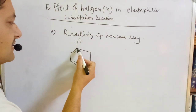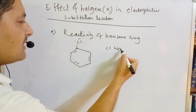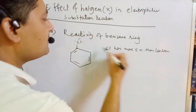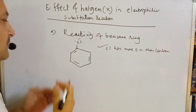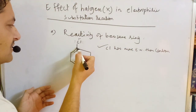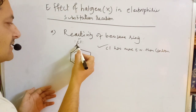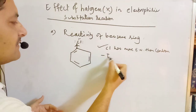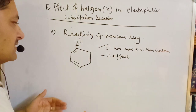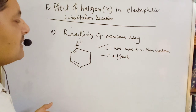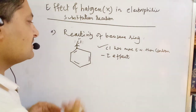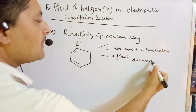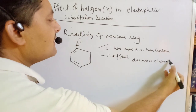Chlorine has more electronegativity than carbon. Because of this, chlorine in the C–Cl bond withdraws electrons through the sigma bond — this is called the minus inductive effect (−I effect). This decreases electron density in the benzene ring.